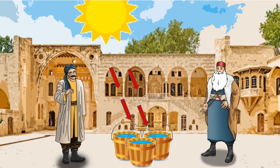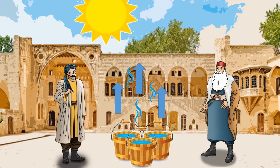The sun was very strong this summer. When the sun heats up the water, it becomes water vapor and goes up to the sky. This is called evaporation. Oh, now I understand — that is the reason why the buckets are empty, the water evaporated!